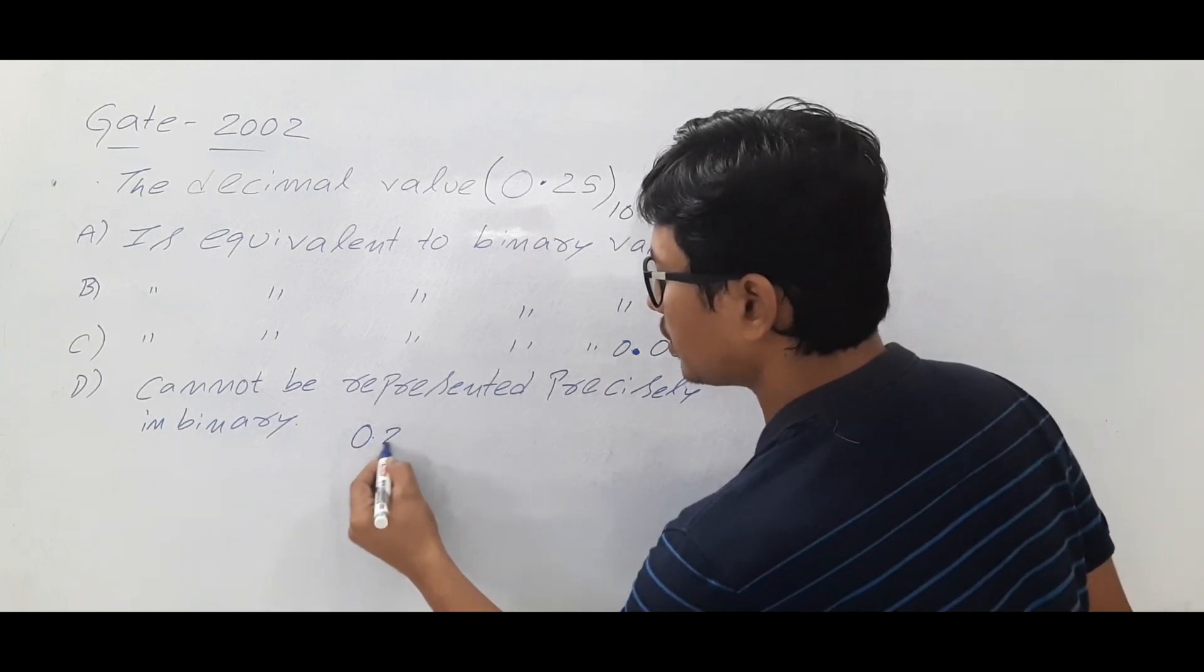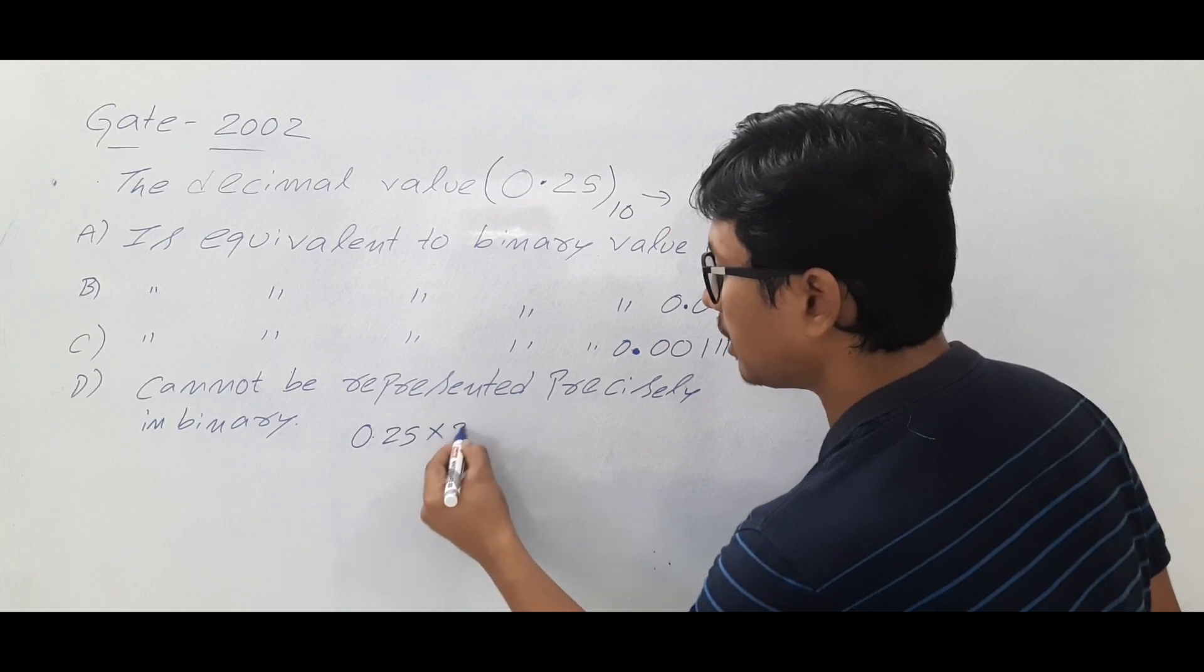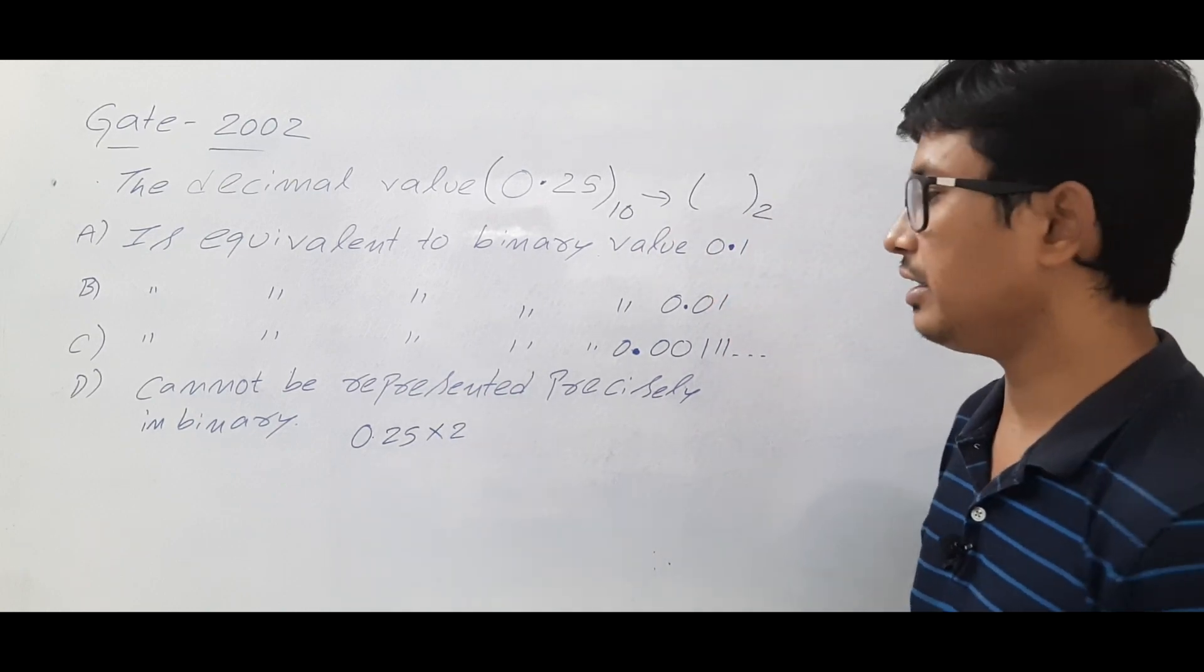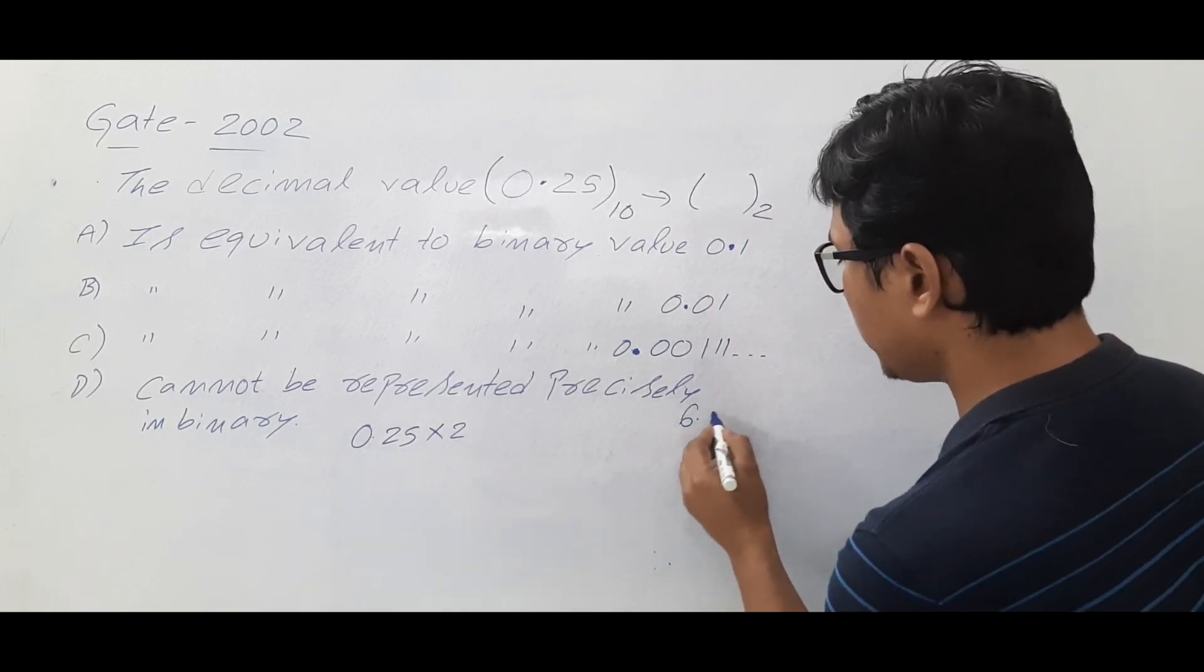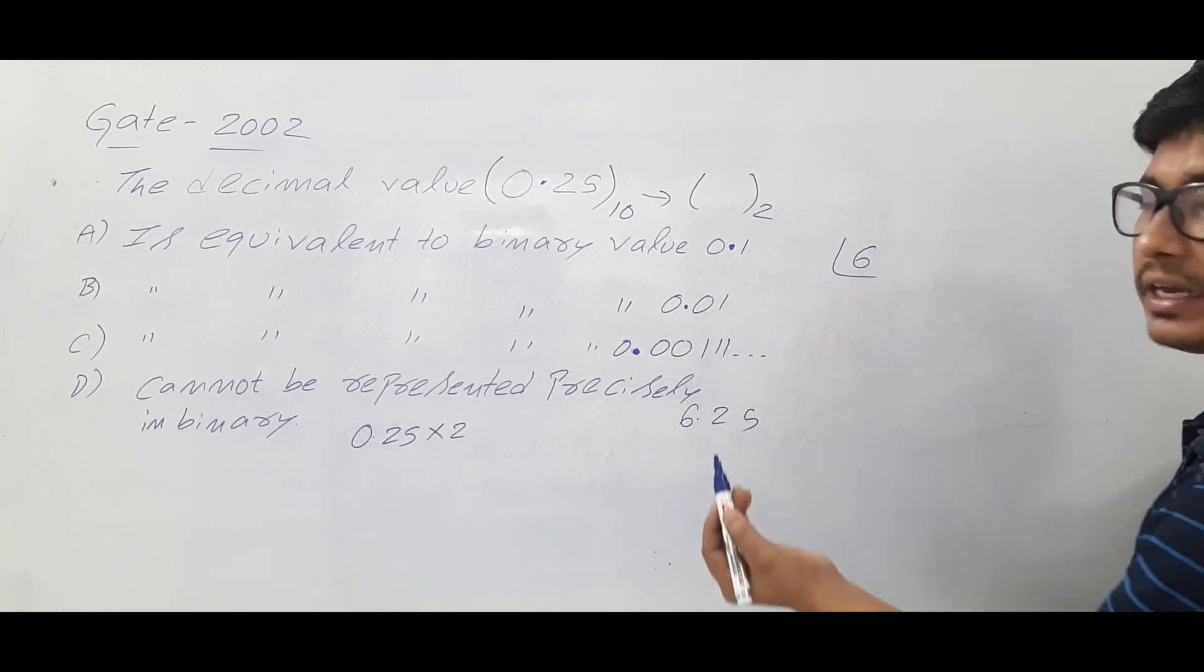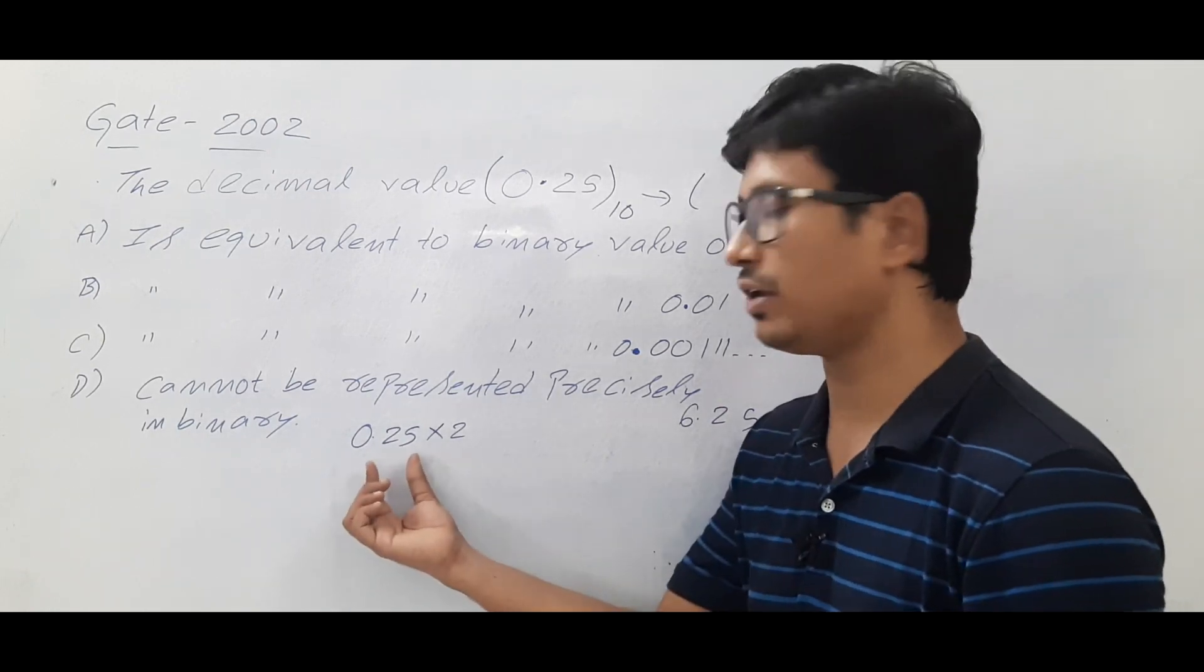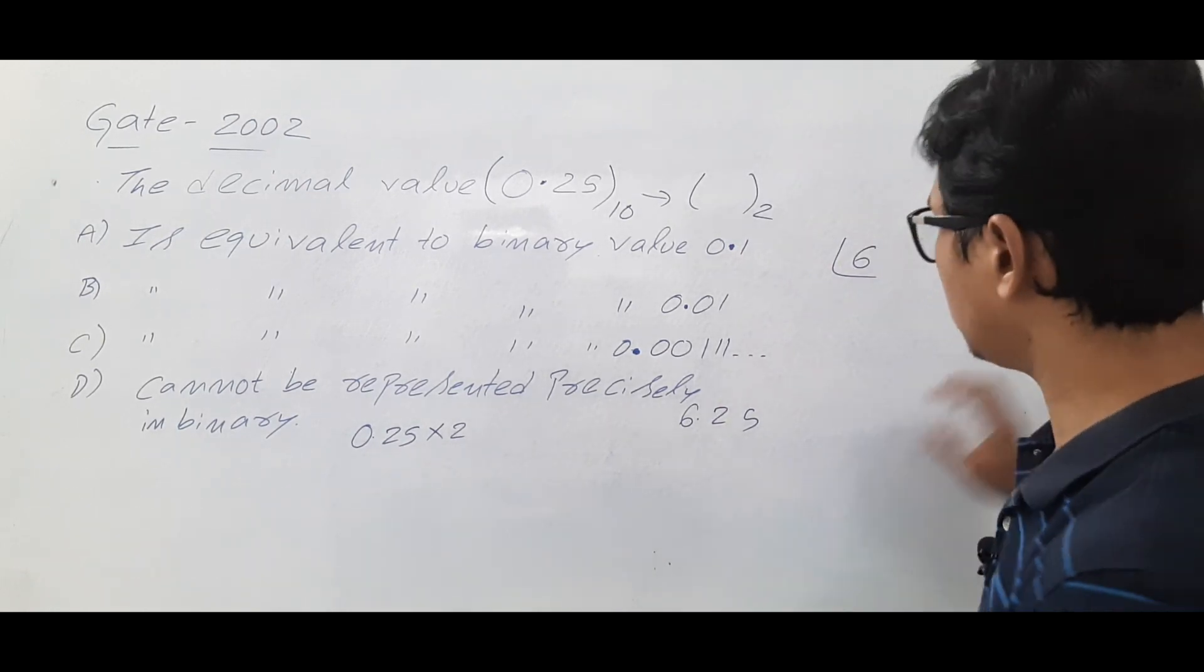Now as you got the 0.25, what you are supposed to do? You have to multiply by 2. If it is some 6.25, I would have done the 6 to be converted into binary number. I will divide the 6 by 2 and the 0.25 I have to multiply with 2.